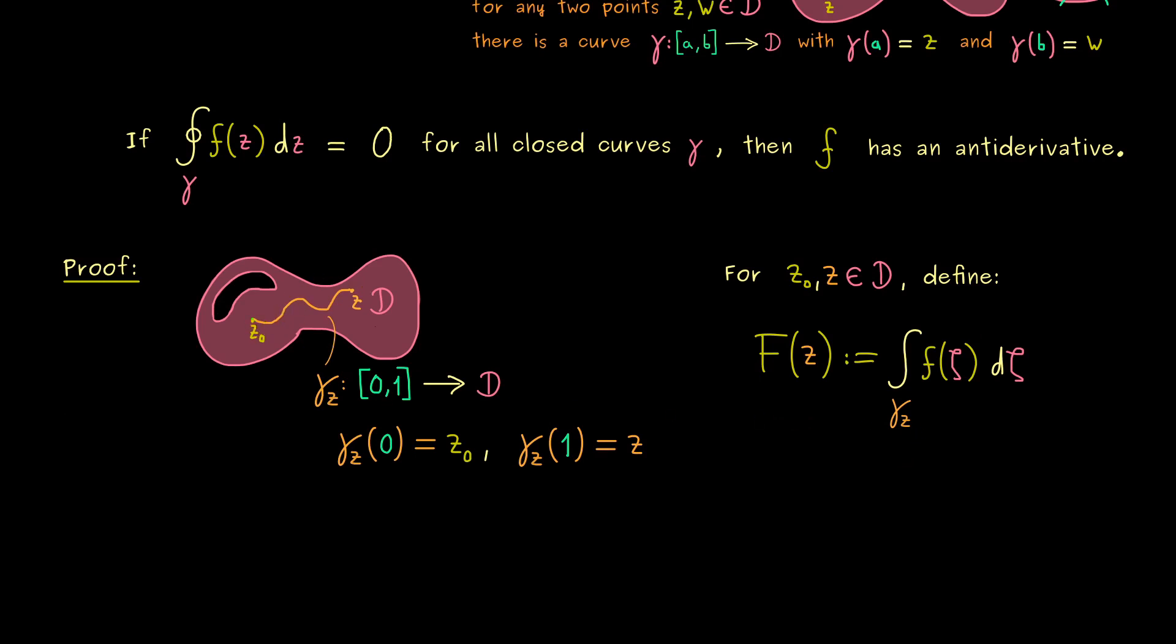Moreover, what you can show here is that the value F(z) does not depend on the exact curve gamma_Z we choose between Z₀ and Z. More concretely, if you choose another curve from Z₀ to Z, you get out the same value F(z). Indeed, how to show this should be clear when you look at the picture here. Namely, you can combine a closed curve out of both curves here. And there we know, by assumption, the integral along the closed curve should be zero.